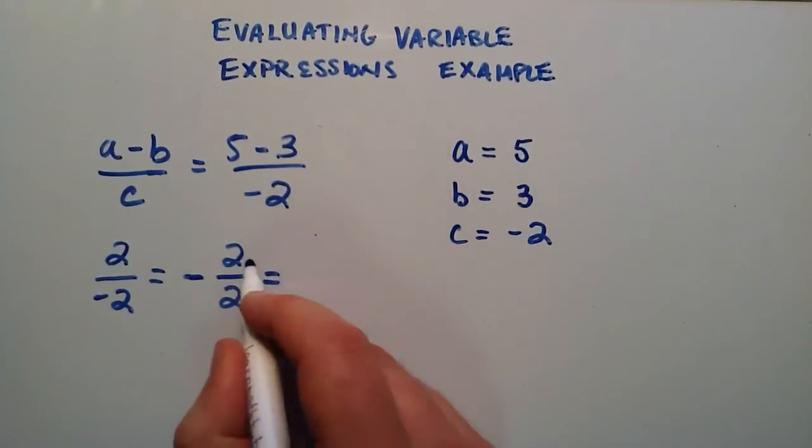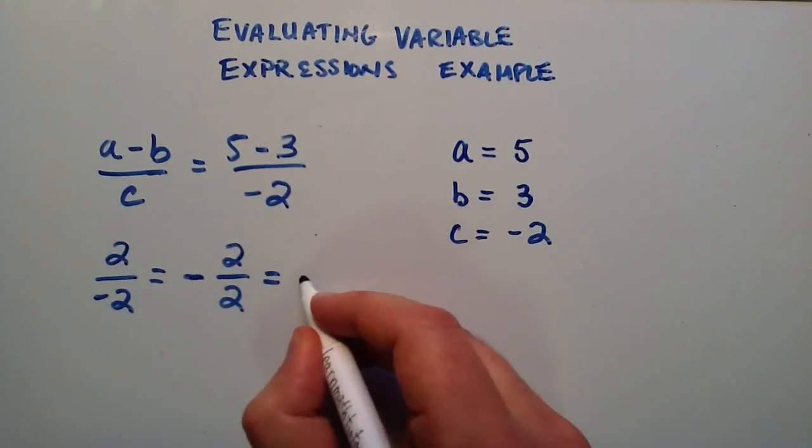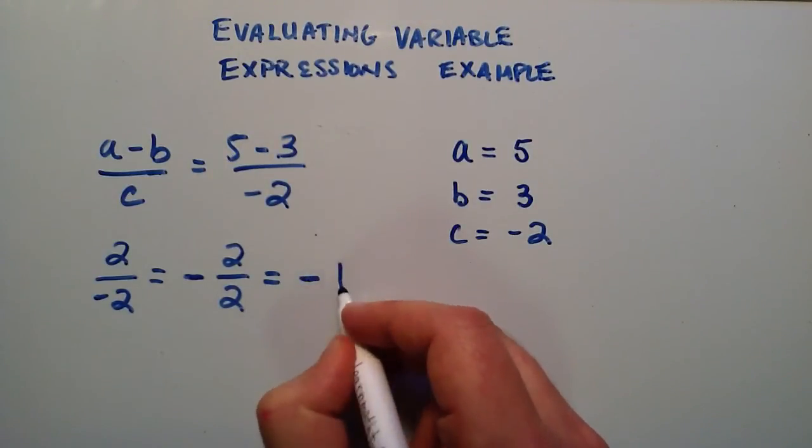And then here we have some number divided by itself. So anything divided by itself is simply equal to the number 1. So this simply gives us our answer negative 1.